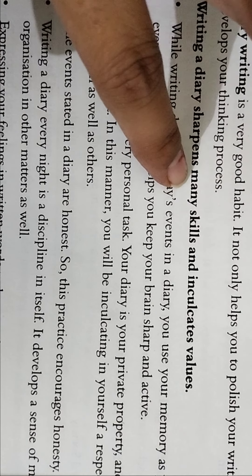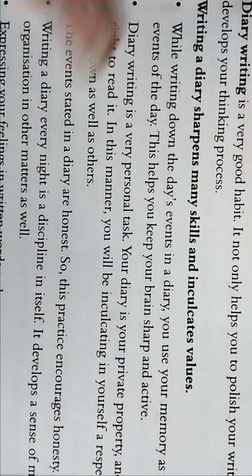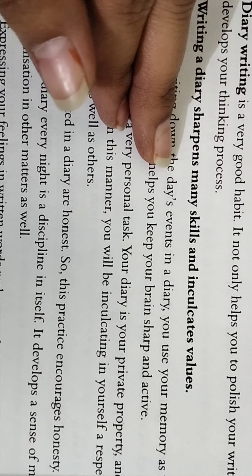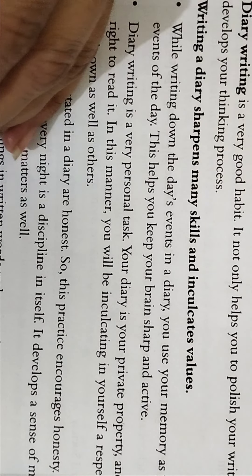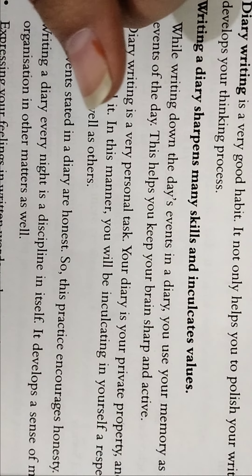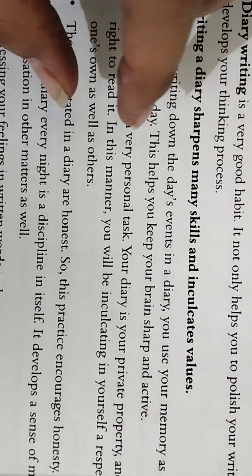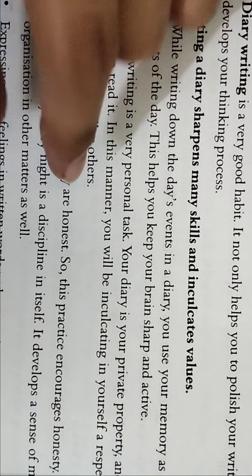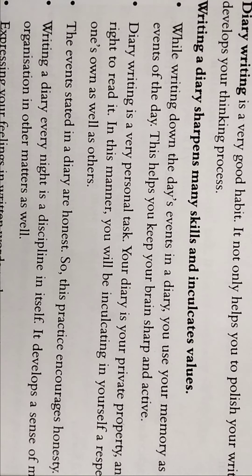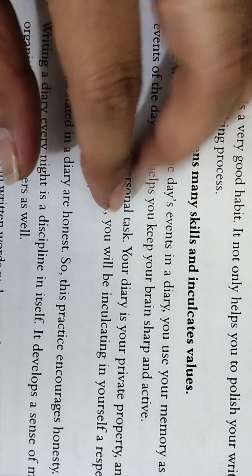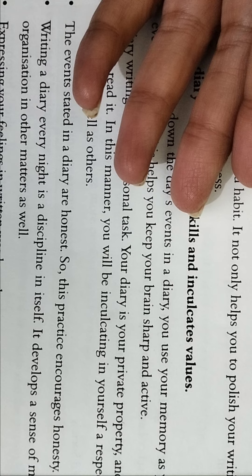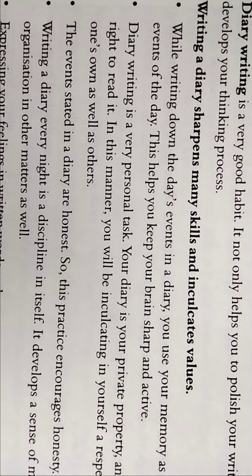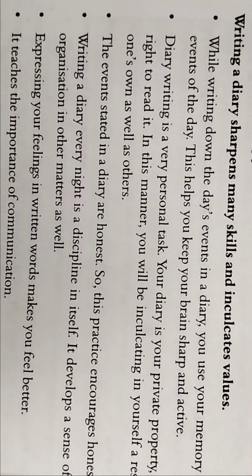To summarize: first, write events chronologically — what happened first, second, third. Second, always use the first person — I, we, us. Third, the diary entry should be related to yourself or your near and dear ones. For example, if your mother said something to you, you can write about that in the diary entry as well.